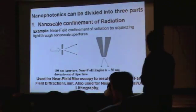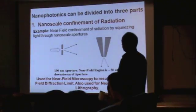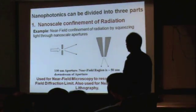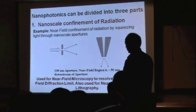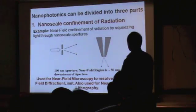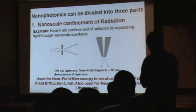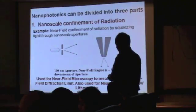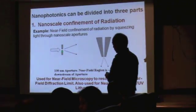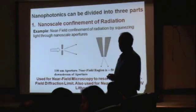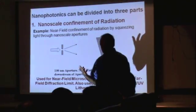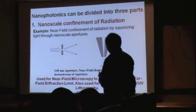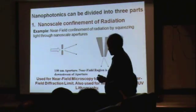Anyway, so nanophotonics can be divided into three parts. First, we'll talk about what is called nanoscale confinement of radiation. And this is also called near-field confinement of radiation by squeezing light through nanoscale apertures. Now, so here I have a nanoscale aperture.